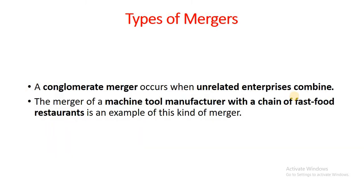Finally, let's look at conglomerate merger. If a merger occurs between unrelated businesses, that will be termed as a conglomerate merger. For example, if a car manufacturer merges with a fast food restaurant, it will be a conglomerate merger. The objective of the conglomerate merger could be to diversify the business and therefore to minimize risk through diversification.